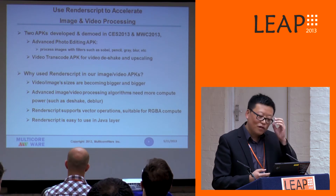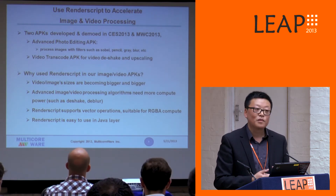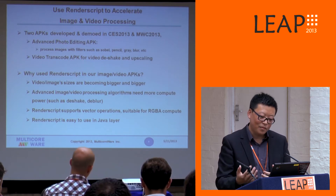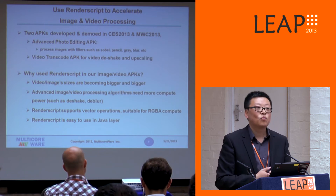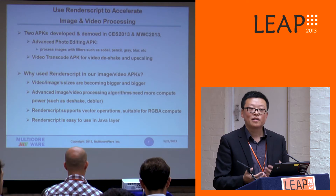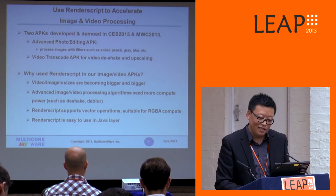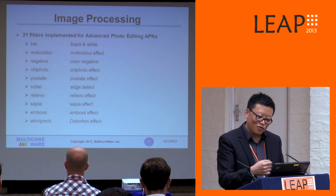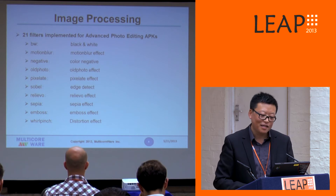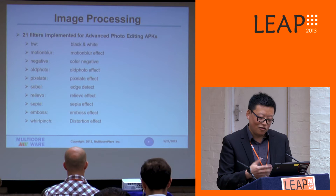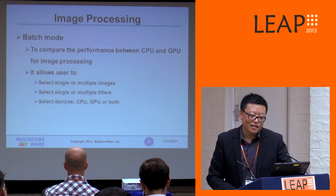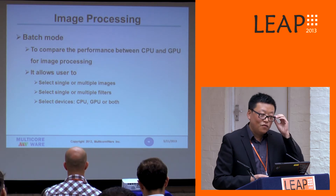For advanced image and video processing, algorithms usually need much more compute power than before — for example, deep learning related work we have been doing. RenderScript supports vector operations, making it suitable for RGBA compute types of tasks. It is also easy to use from the Java layer. Below are the filters we have implemented so far for the photo editing APK, including things like motion blur and many other different filters.